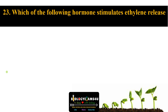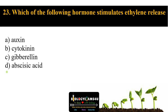Question number twenty-three: which of the following hormones stimulates ethylene release? Option A auxin, option B cytokinin, option C gibberellin, option D abscisic acid. The answer is abscisic acid. Abscisic acid and ethylene — the two growth inhibitors — work together in abscission and in the ripening process.